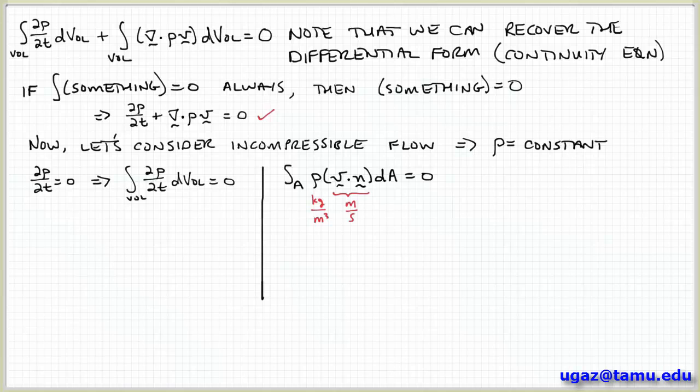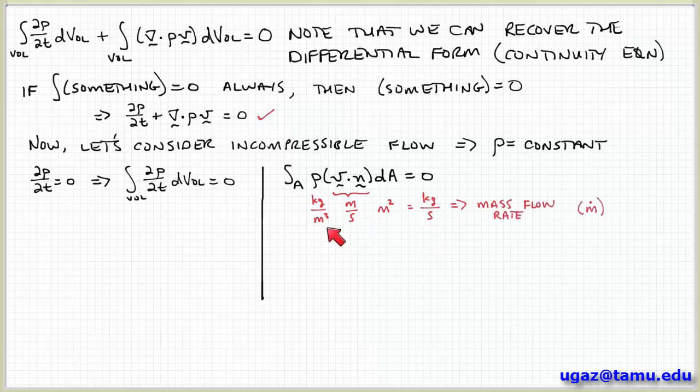V dot n, that's just the velocity component normal to the surface, that's meters per second. And area has units of square meters. So this term has units of mass per time because you have meters cubed in the denominator and meters cubed in the numerator. So this is an expression of the mass flow rate of the system.